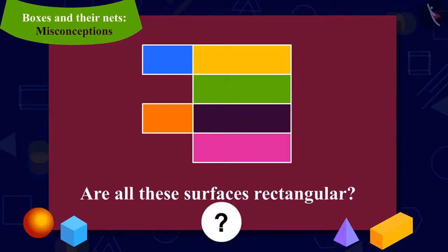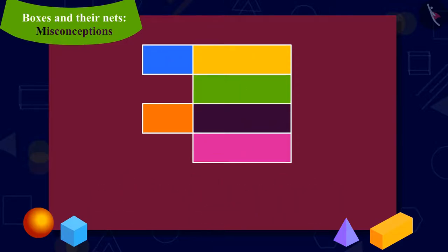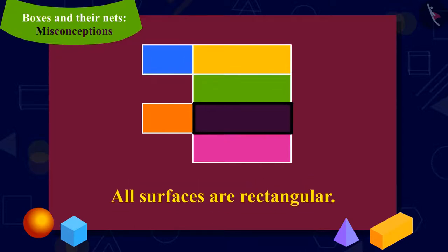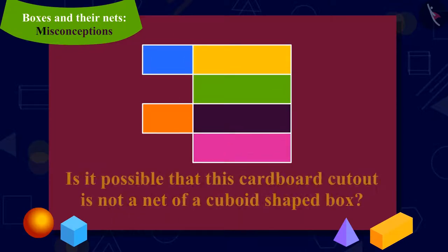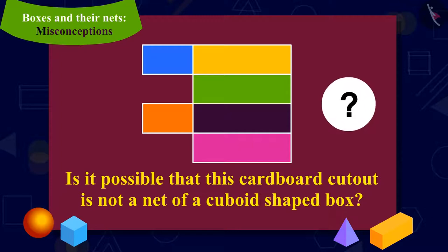Are all these surfaces rectangular? Yes, all surfaces are rectangular. Then can it be possible that this cardboard cutout is not a net of a cuboid shaped box?